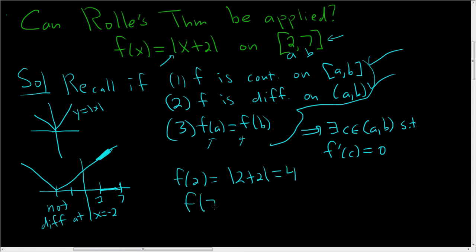and f(7) = |7+2| = |9| = 9. So f(2) ≠ f(7), since 4 ≠ 9.